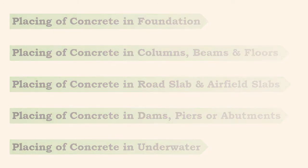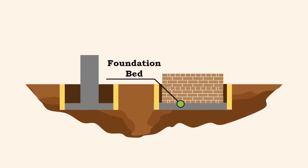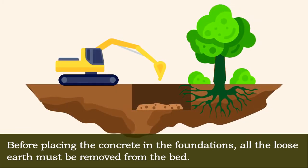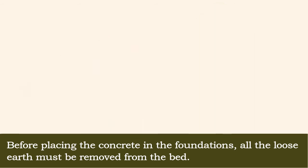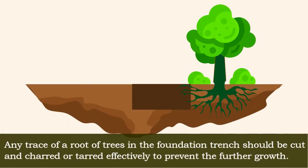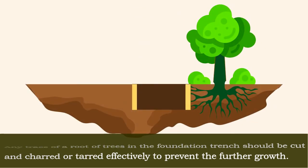Concrete is always used to lay the foundation bed below the walls or columns. Some important precautions to be followed are: before placing the concrete in the foundations, all the loose earth must be removed from the bed. Any trace of a root of trees in the foundation trench should be cut and charred or tarred effectively to prevent further growth.